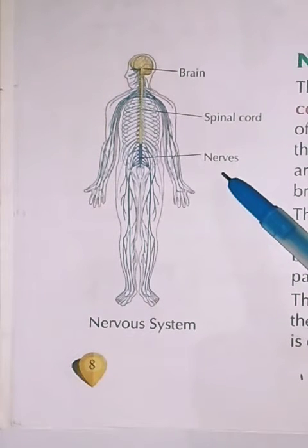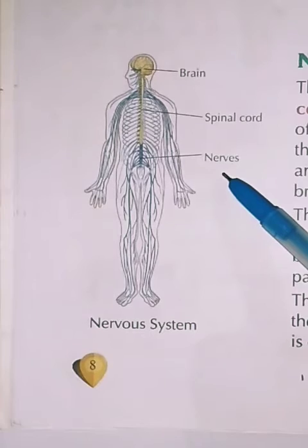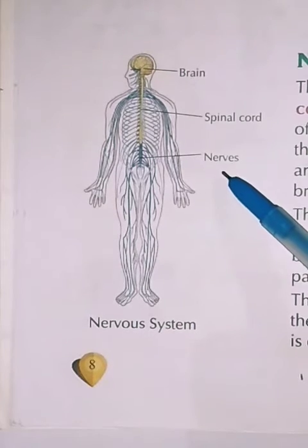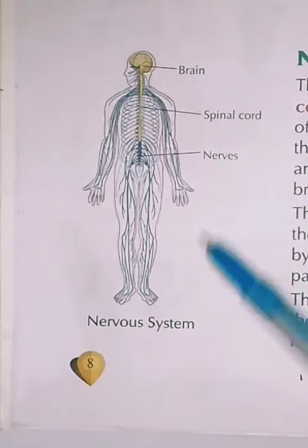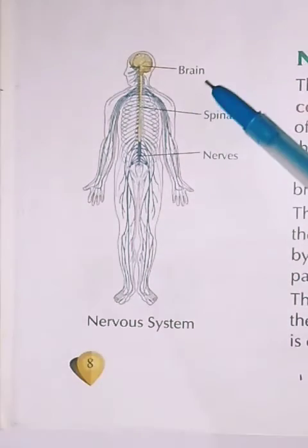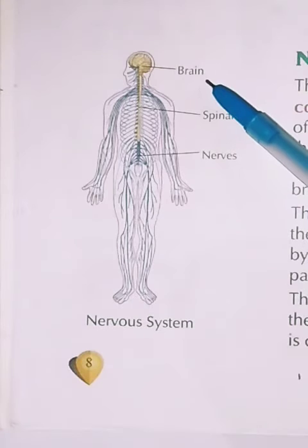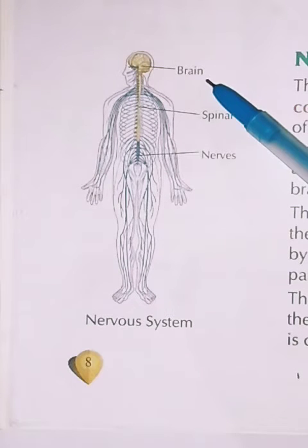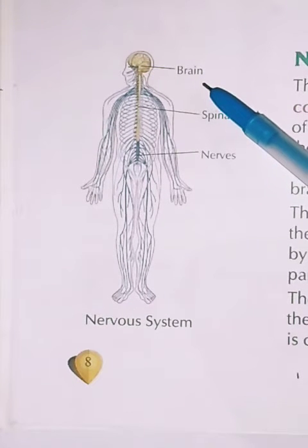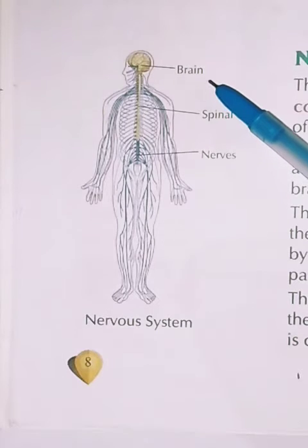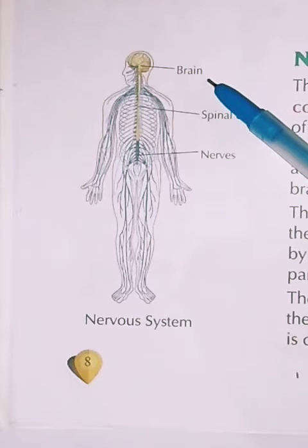First of all, the brain. The brain is the main coordinator and director of our body's activities. The activities we can do — we write, read, think, and learn — all of these are controlled by our brain.